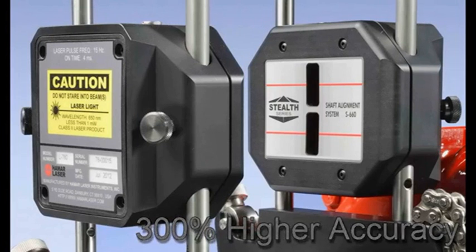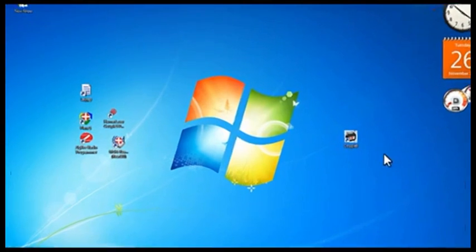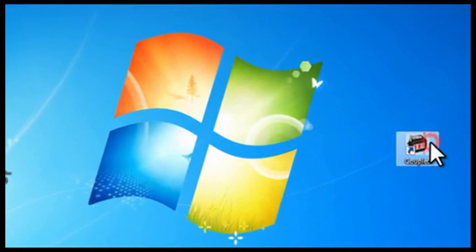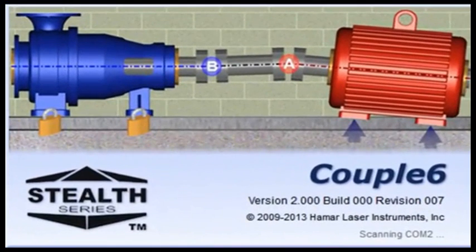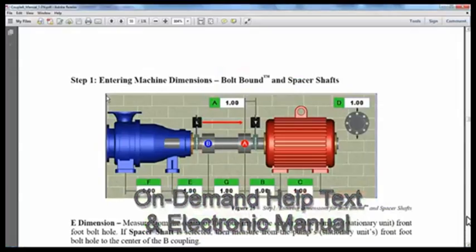300% higher accuracy and a 20-millimeter PSD sensor. Added to that is our extremely powerful Couple 6 shaft alignment software, offering many advanced features such as easy guide software navigation, on-demand help text with searchable electronic manual,